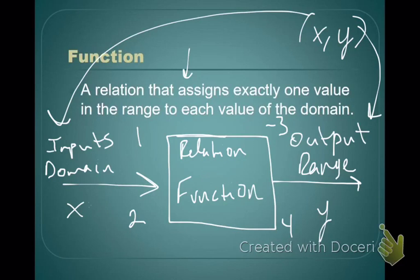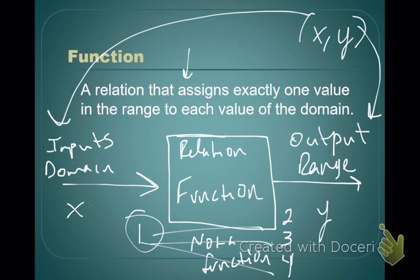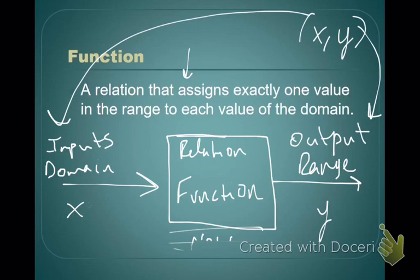That's what this means — one range value for each domain value. Now, if for some strange reason when we put a 1 into this relation and it gives us a 2, a 3, and a 4, then this is no longer a function, because for one domain we're getting three range values. I should know exactly what I'm going to get coming out — I shouldn't have to guess. So if I put a 1 in, I have to get exactly one number coming back out. If that's not true, then it's not a function anymore — still a relation, just not a function.